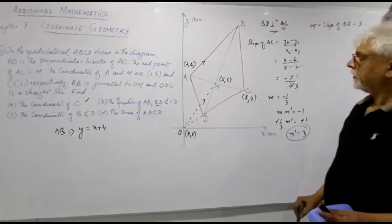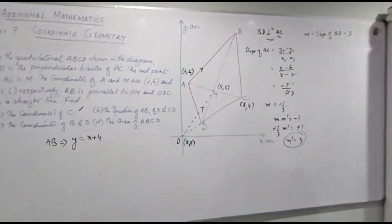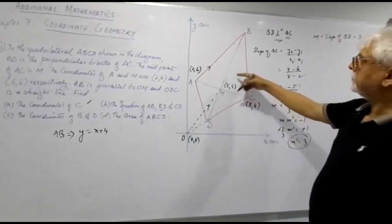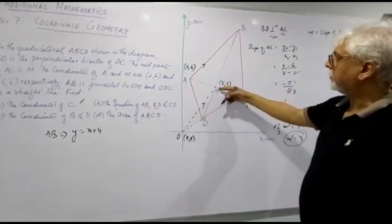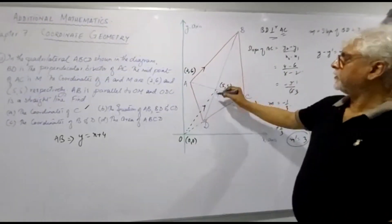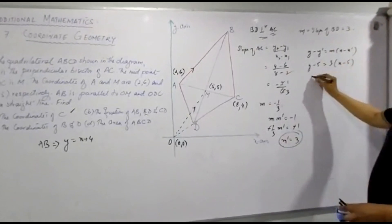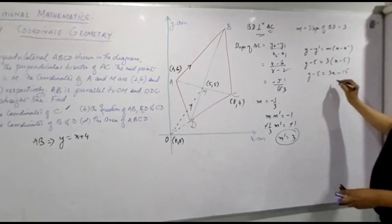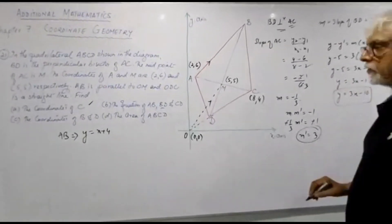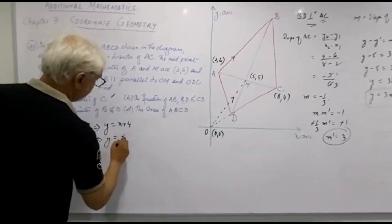Now what is the equation of BD? The slope of BD is 3. Since M at (5, 5) lies on BD, using Y minus Y dash equals M into X minus X dash: Y minus 5 equals 3 times (X minus 5). So Y equals 3X minus 10. The equation of BD is Y equals 3X minus 10.